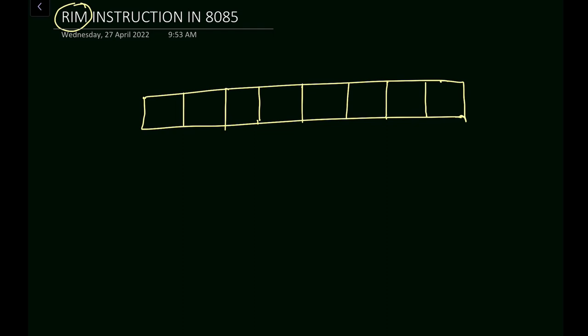So what is the full form of RIM? RIM stands for Read Interrupt Mask. That means whatever be the interrupt, that is masked — meaning it is disabled. Masking means it is disabling.